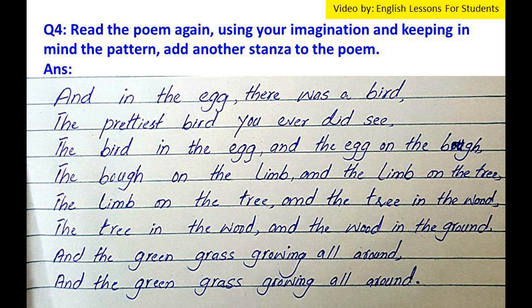Question 4: Read the poem again using your imagination and keeping in mind the pattern. Add another stanza to the poem. Answer: And in the egg there was a bird, the prettiest bird you ever did see. The bird in the egg and the egg on the bone, the bone on the limb and the limb on the tree, the tree in the wood and the wood in the ground, and the green grass growing all around, and the green grass growing all around.